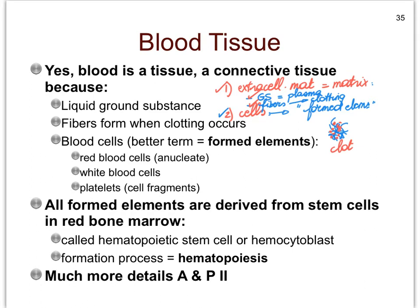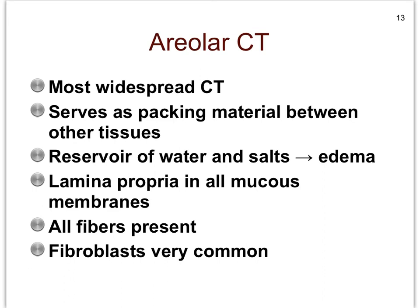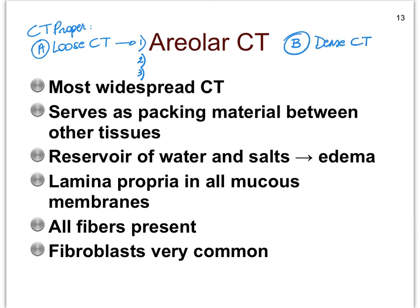Let's now move on with the tissues that belong to the connective tissue proper group — there are six of them. The connective tissue proper can be divided into two subclasses: the loose connective tissues and the dense connective tissues. Within the loose connective tissues, areolar connective tissue is one, and there are two more. Let's first focus on the loose connective tissues, and particularly the first one — areolar.